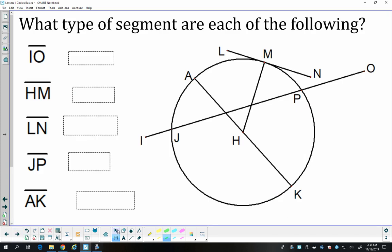So let's name some segments. Let's first look for segment IO. Segment IO starts at I and goes to O. It starts outside the circle, cuts through the circle and hits it twice, and then goes back out. So that is a secant segment.